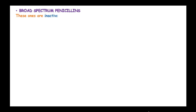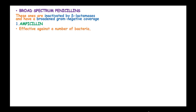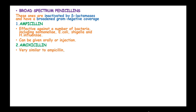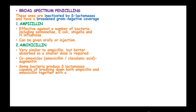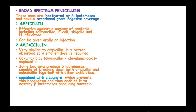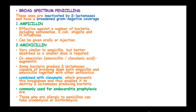Broad spectrum penicillins are inactivated by beta-lactamases but have broad gram-negative coverage. They include Ampicillin, which is effective against a number of bacteria including Salmonella, E. coli, Shigella and H. influenzae, and can be given orally or as an injection. Amoxicillin is very similar to Ampicillin but has better absorption and a smaller dose is required. Co-Amoxiclav, or Amoxicillin with clavulanic acid known as Augmentin, combines Amoxicillin with clavulanate to prevent breakdown by beta-lactamase-producing bacteria. This is commonly used for endocarditis prophylaxis; those allergic to penicillins can take clindamycin or azithromycin.